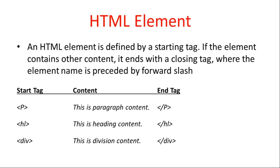The structure is: starting tag, content, and closing tag — it ends with a closing tag where the closing tag is added with a forward slash. For example, a paragraph tag contains content, and then ends with an ending tag. This is an element — this is a heading tag, this is a division tag.